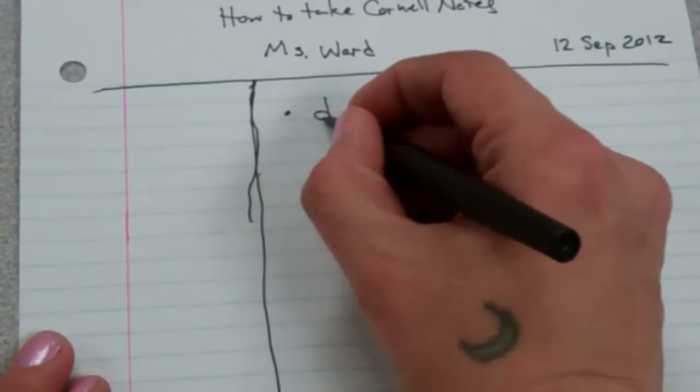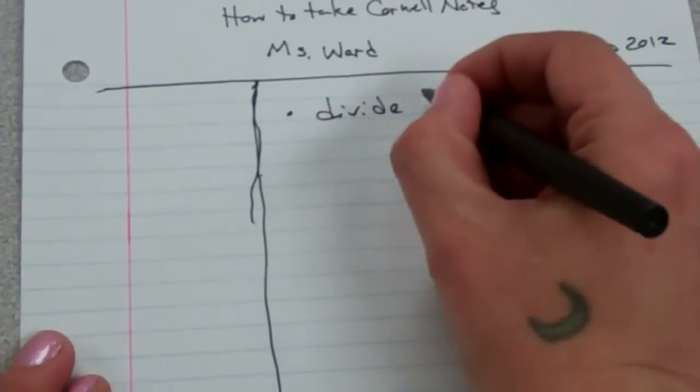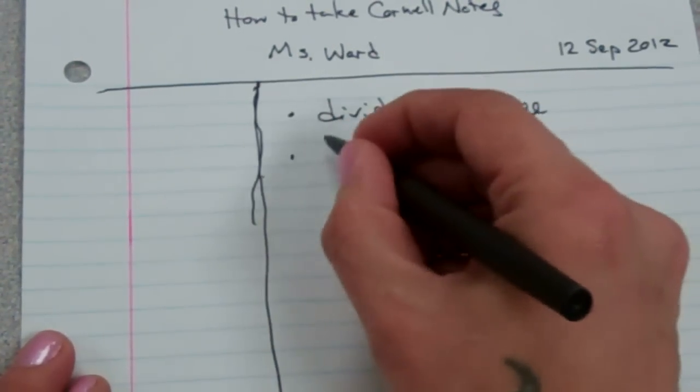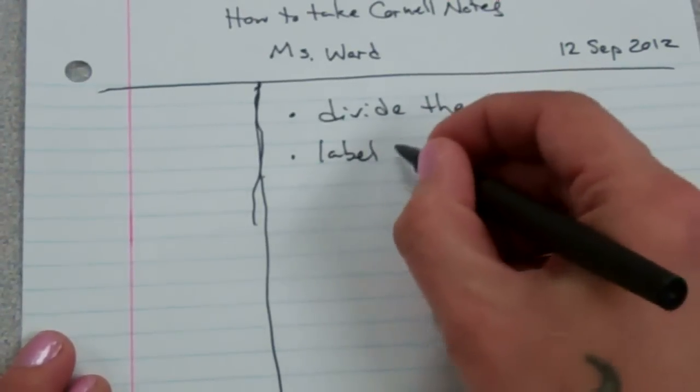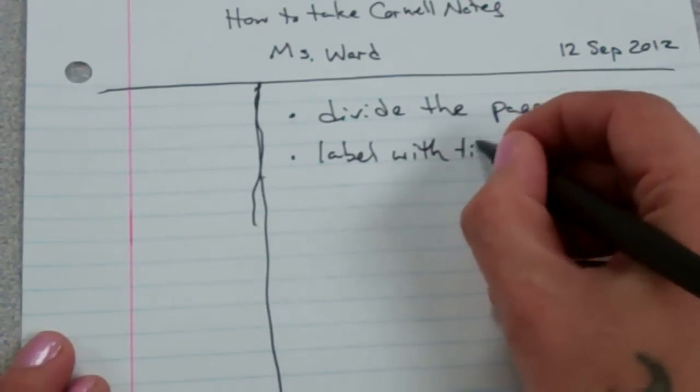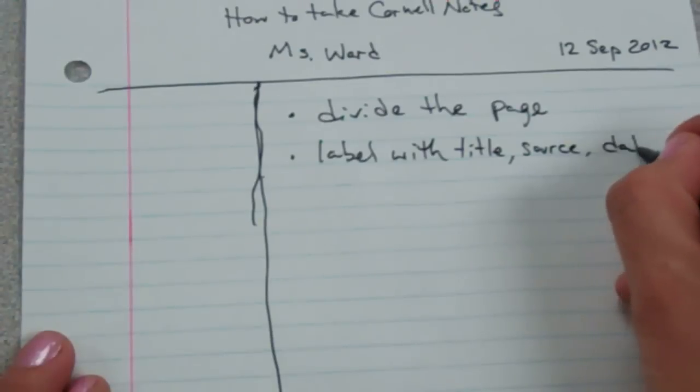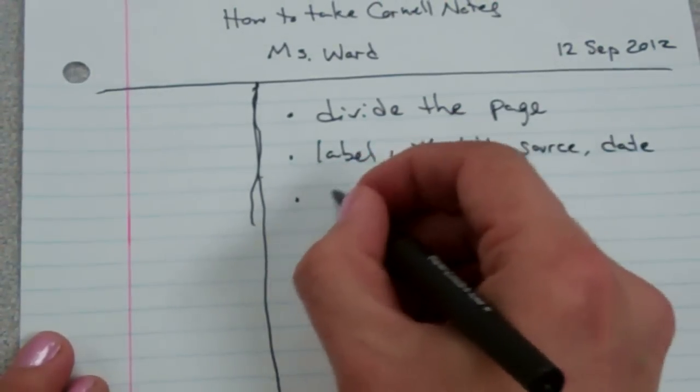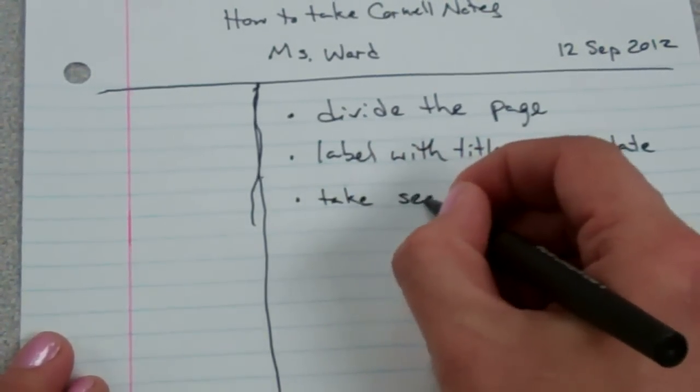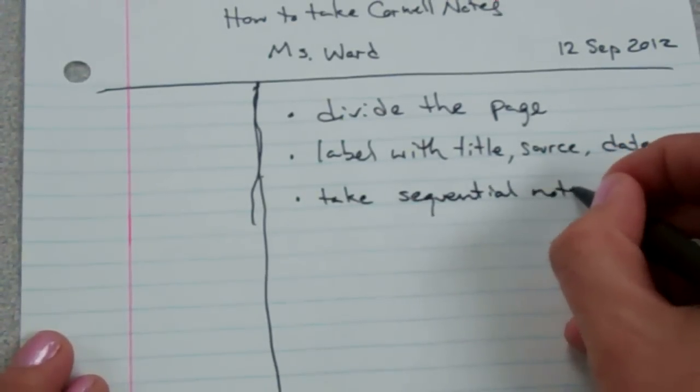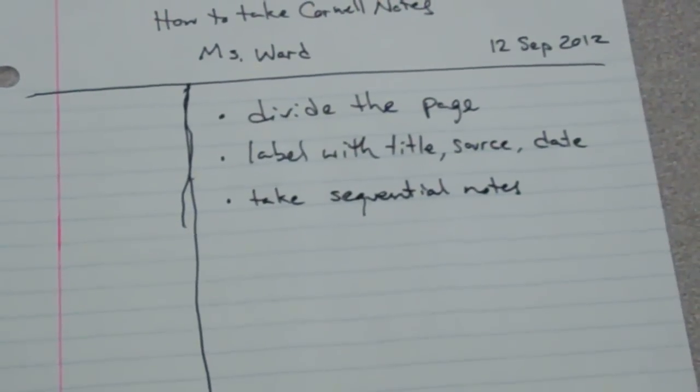So, the first step so far: divide the page, label with title, source, and date, and then take sequential notes. That means take notes in the sequence or the order in which you got them. Please pause the video and take a moment to make your page look like mine right now.